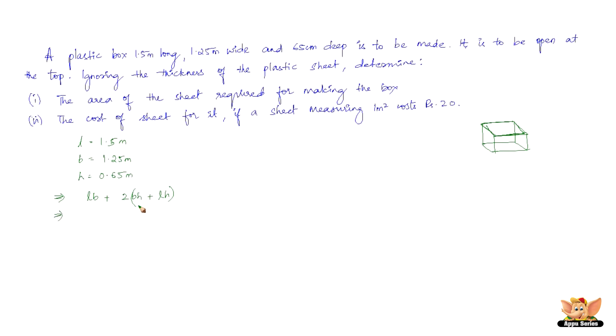Substituting the values of length, breadth and height in this formula, we have 1.5 into 1.25 plus 2 into 1.25 into 0.65 plus length is 1.5 into height is 0.65. So, solving this, we get 1.875 plus 3.575 meters square, which is nothing but 5.45 meters square.